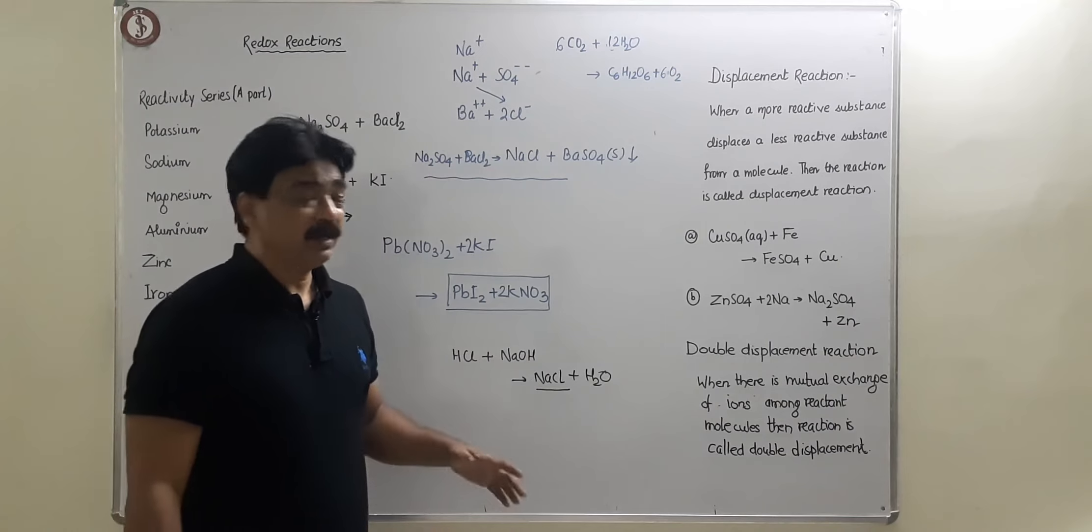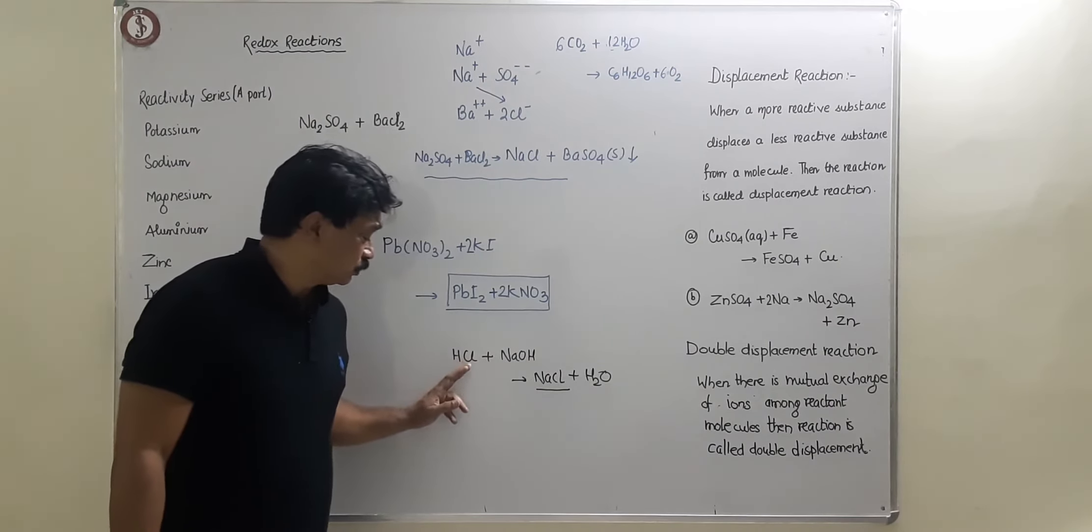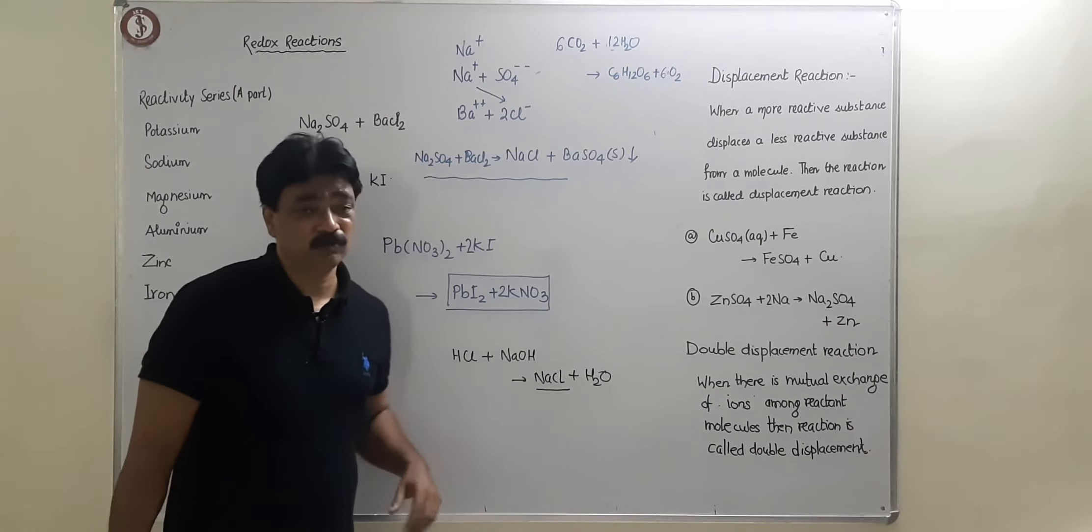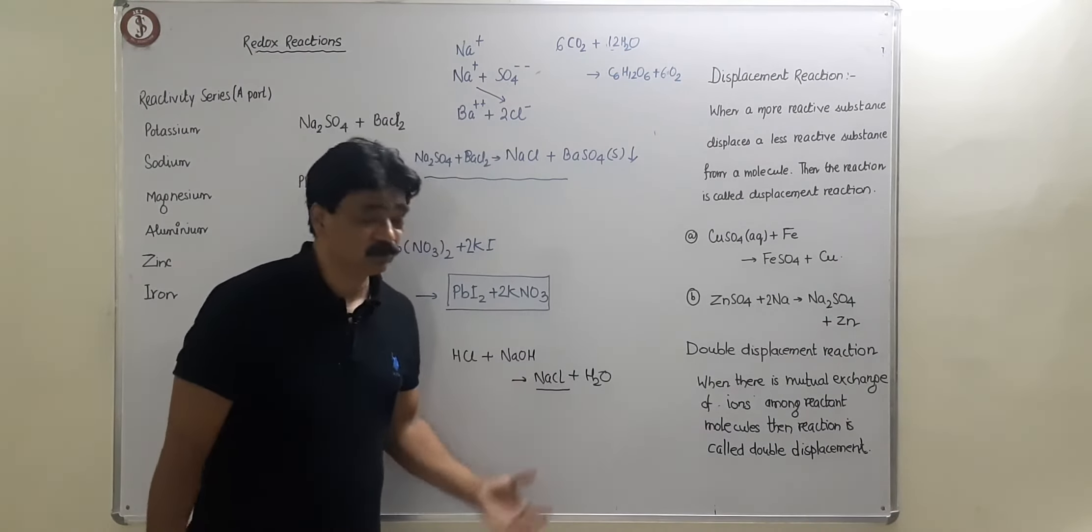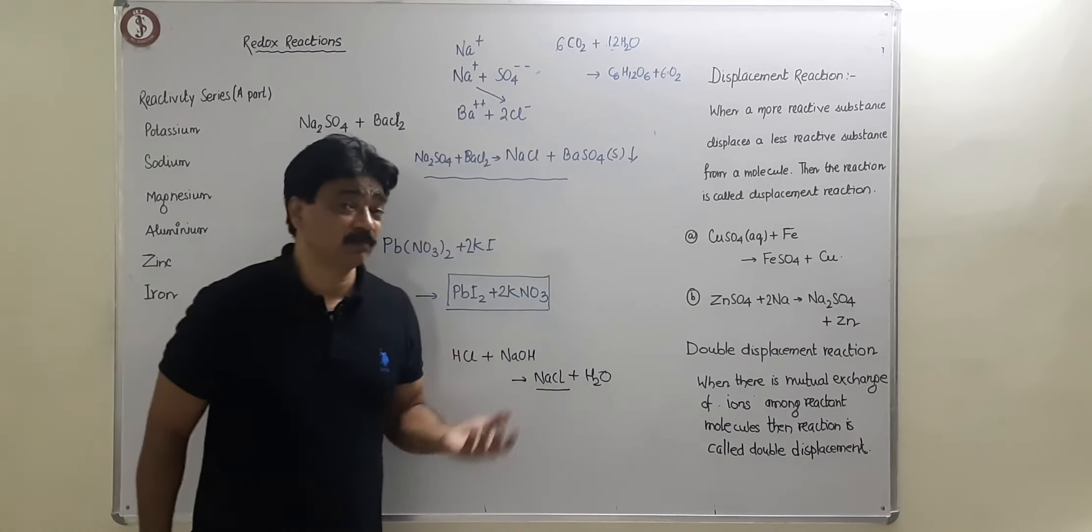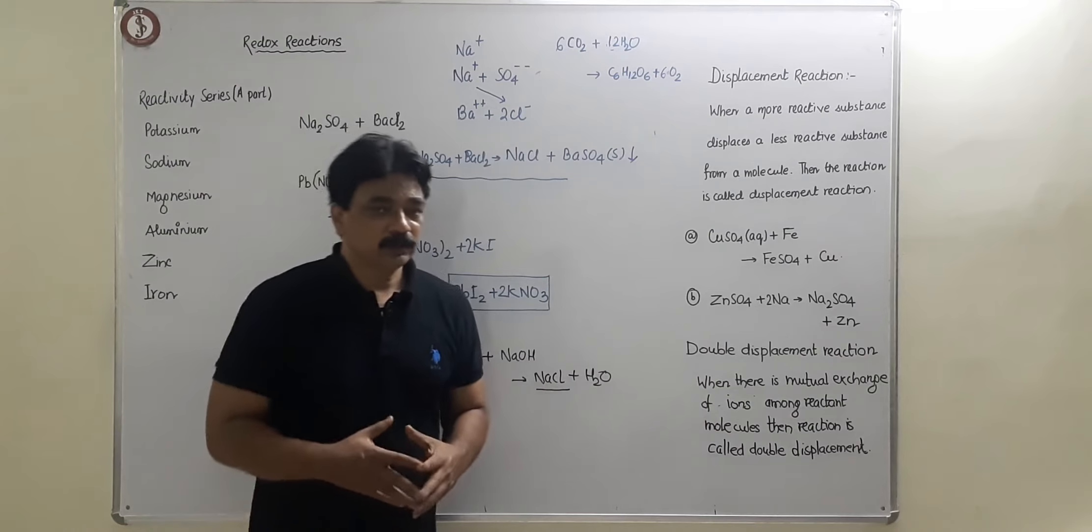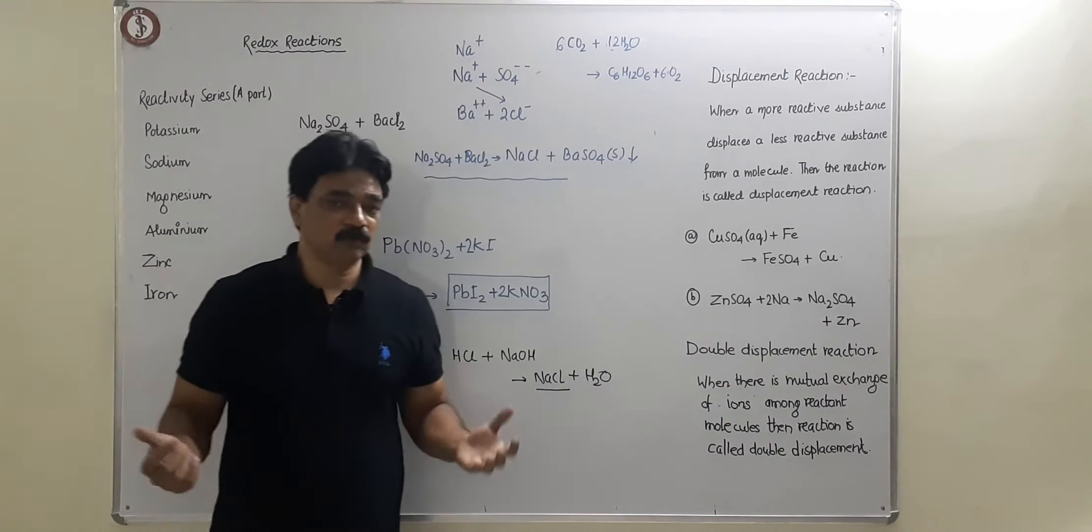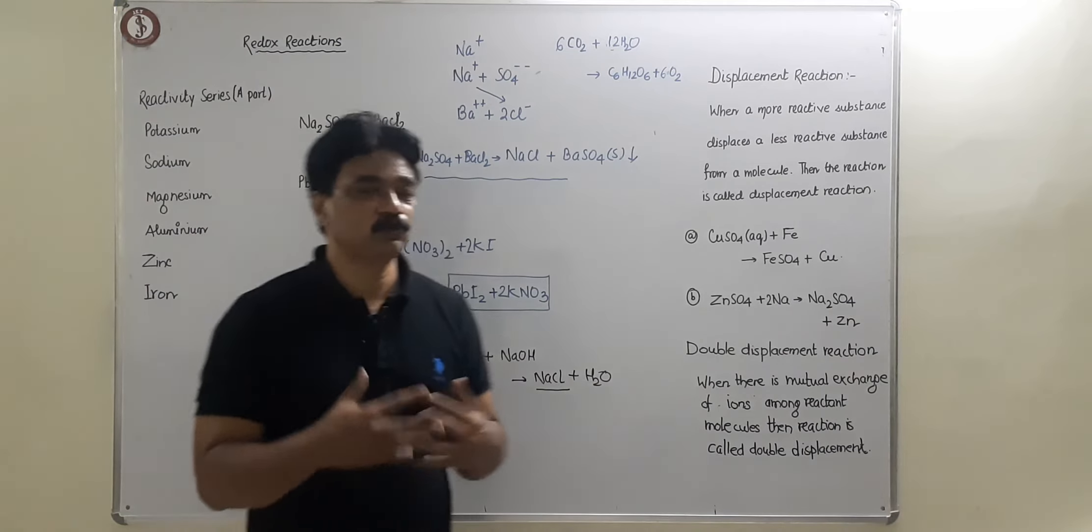Salt does not mean only NaCl. If there was KOH here then it will be KCl, so KCl is another salt. Suppose instead of HCl I take H2SO4, then Na2SO4 will form. So Na2SO4 is also a salt. Salt does not only mean sodium chloride. Sodium chloride is table salt. So in complete neutralization reaction, salts are formed and water is formed.